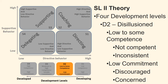Development level 2: the employee is a disillusioned learner. The employee has low to middling competence — some knowledge and skills, learning but not competent yet, with inconsistent performance and progress. The employee has low commitment: discouraged and frustrated, maybe ready to quit, overwhelmed, demotivated, confused and concerned, and afraid of making mistakes.